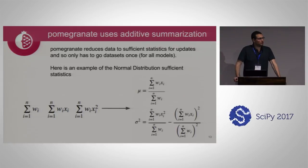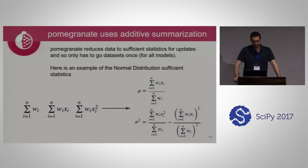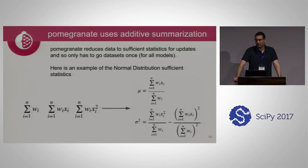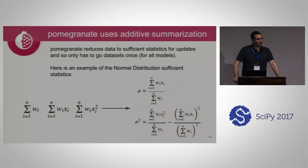If you know the type of distribution you're fitting, you can do it far more simply. To calculate a normal distribution, you need the mean and standard deviation, but you can get an exact update in a single pass through the data by simply calculating the sum of weights, the sum of the weighted points, and the sum of the weighted points squared. From these three values, you can exactly calculate the mean and variance. This means Pomegranate only has to go through the data once for every model.